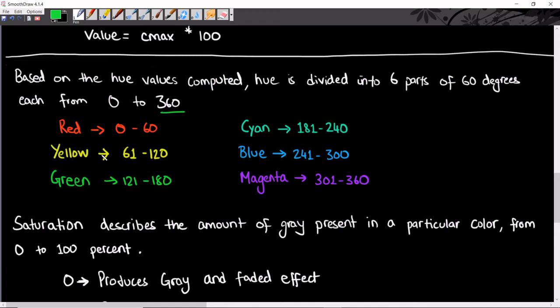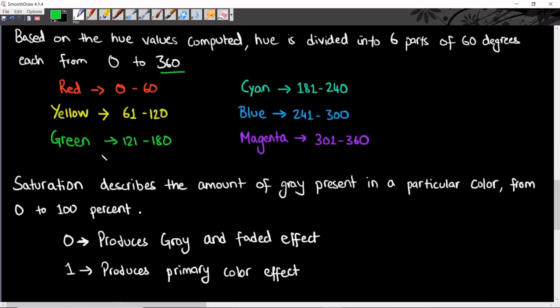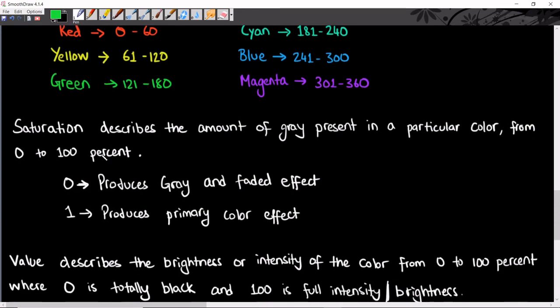Hue gets sorted into one of these six categories. Saturation describes the amount of gray present in your particular color, from 0 to 100 percent. Zero produces gray and a faded effect—it's not colorful, only grayish. Saturation of 1 or 100 percent produces your primary color effect with no gray.